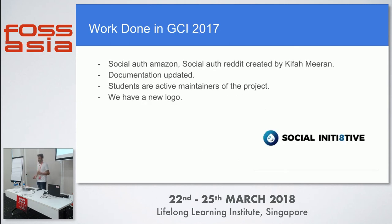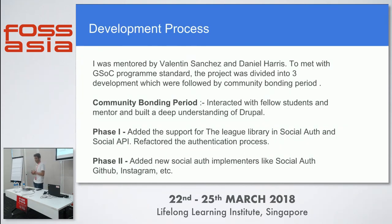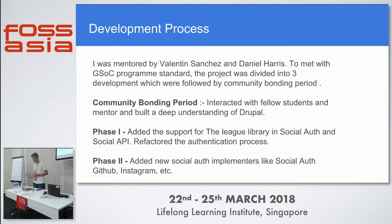In GCI 2017, Social Auth Amazon and Social Auth Reddit were created by Kifa Miran. They also updated the documentation, and students are now active maintainers. We also have a new logo for Social Initiative created as part of Google Code-In. My project was mentored by Valentine and Daniel Harris, who came up with the Social Initiative project. In GSoC, there are three major milestones that must be met.